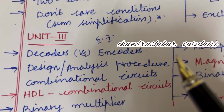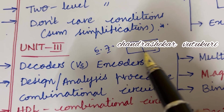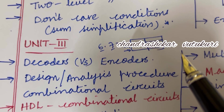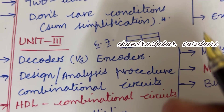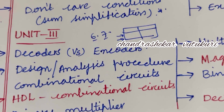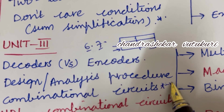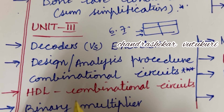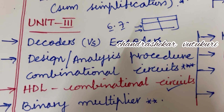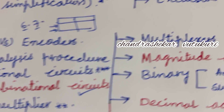If you get a theory question like decoders and encoders, write their differences in tabular column form with two sets of pens very neatly. I have uploaded a video on how to write a theory paper to score better marks. Design analysis procedure for combinational circuits is set as a top question — it is a combination of 5 and 5 marks. HDL for combinational circuits is also a top question, and binary multiplexer may be a short question.